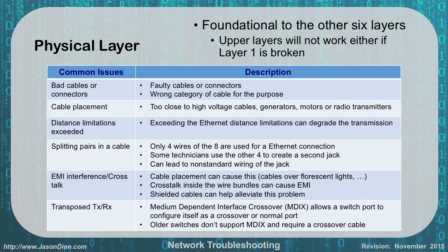EMI interference and crosstalk: cable placement near fluorescent lights, motors, or high voltage cables will cause EMI. You can also have crosstalk inside the wires. Using shielded cables and proper cable placement will help minimize EMI. Regarding transposed transmits and receives — MDIX (Media Dependent Interface Crossover) allows a switch port to configure itself as crossover or normal based on cable needs. Older switches don't support MDIX, so on the exam, if MDIX isn't mentioned, assume you need a crossover cable. Switch-to-switch, router-to-router, and computer-to-computer all need crossover cables. Two different device types use straight-through.